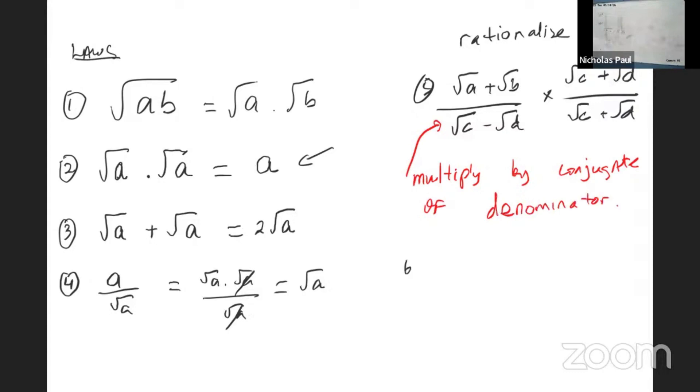And the last one kind of goes with number five. If you have root c minus root d and you multiply it by the conjugate root c plus root d, what's the answer all the time? What's root c minus root d by root c plus root d all the time? What you'll get?